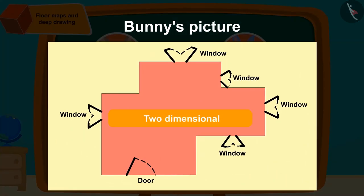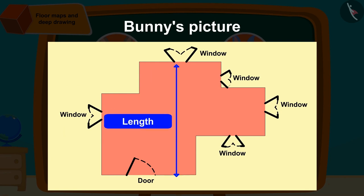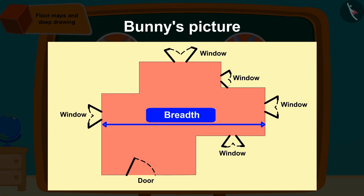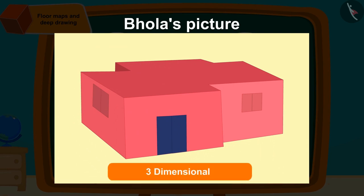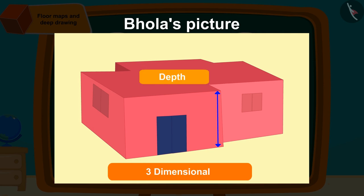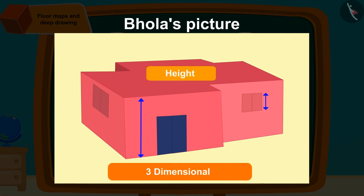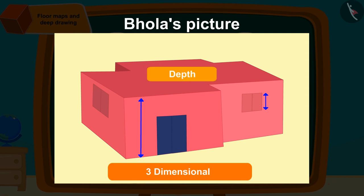The floor map that Bunny had made is a two-dimensional figure which has only the length and breadth of the room. That's why we cannot tell about the height of the room or the window. Bholla's portrait depicts all three dimensions — we can see the length, breadth, and depth of the room. That's how we can tell about the height of the room or window from Bholla's picture. Since we can also estimate the depth, we call the pictures drawn by Bholla deep drawings.